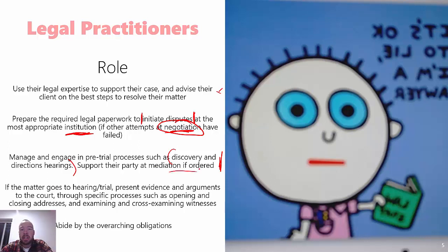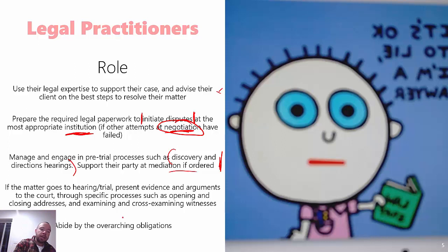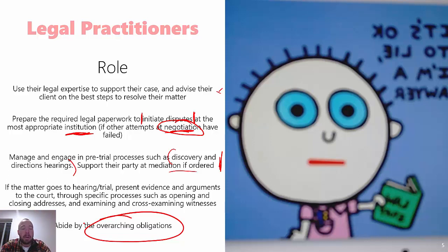If there's a mediation, they'll go to the mediation and support you with how you conduct yourself, and might run that mediation for you in terms of your viewpoint. And then ultimately, if a mediation does go to trial or to a hearing, a legal practitioner will then present your case. You have party control over your case and organising your legal practitioners, and then they will run the case — examine and cross-examine witnesses, prepare documents, lead that evidence, do the opening and closing addresses, etc. Legal practitioners also have to abide by those overarching obligations — so taking reasonable steps to resolve the dispute, acting honestly, etc.